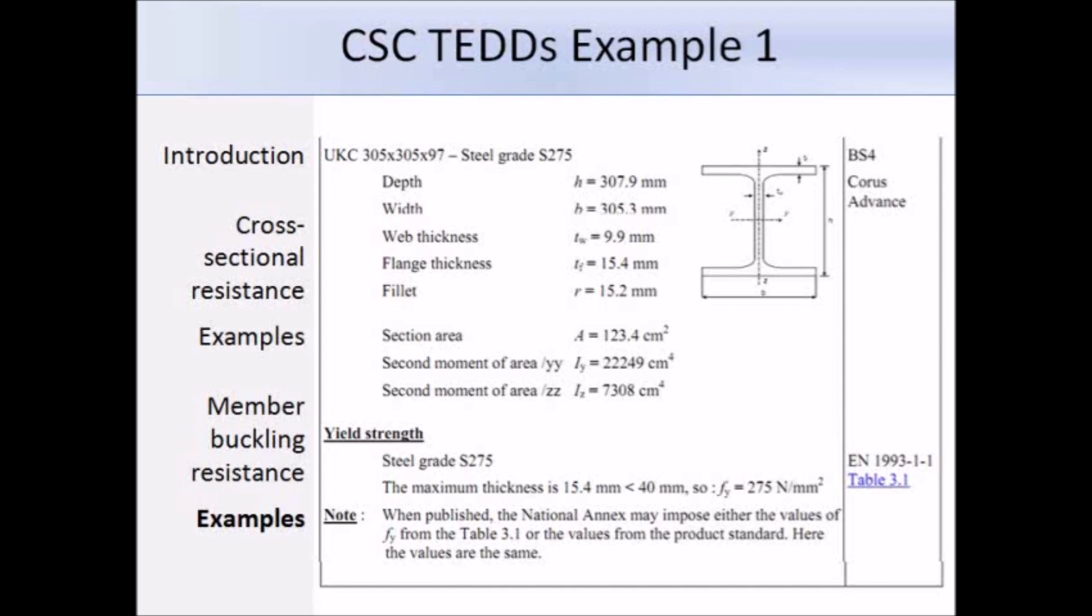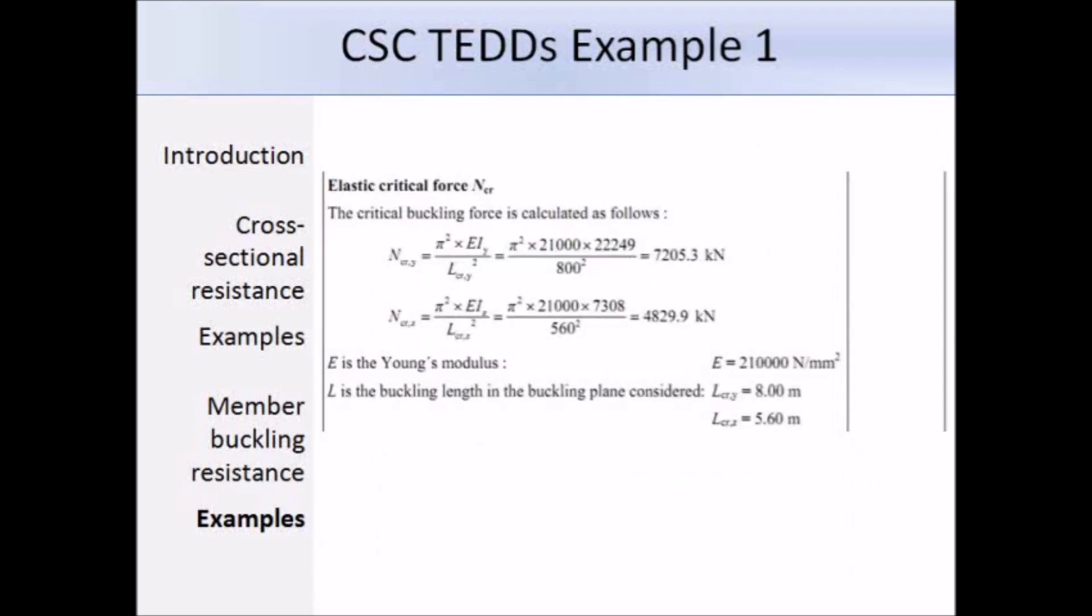There's a note at the bottom telling us that the national annex may impose values from either table 3.1 or the product standard. We know that the UK national annex recommends we use the product standard, but in this case we'll still get an answer of 275 N/mm². Now we need to work out NCR, so we're given the Young's modulus and we listed the second moment of area for both axes in the section properties. We have already worked out the buckling length, so substituting in the values we get 7205.3 kN about the y-axis and 4829.9 kN about the z-axis.